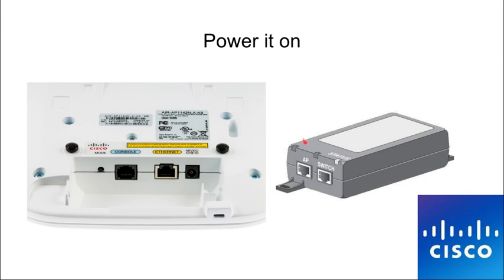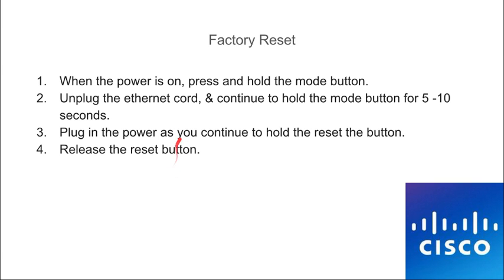The first thing you're going to do is power it on. Take the power injector, plug it in, then take an Ethernet cord to the AP and the other end goes into Ethernet. Once it's powered on, factory reset it: press and hold the mode button, unplug the Ethernet cord, continue to hold the mode button for about five to ten seconds, then insert the Ethernet cable back in while continuing to hold the mode button. Once it's completely powered on, release the mode button.